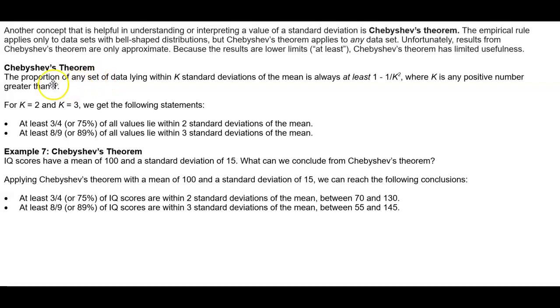Chebyshev's theorem is the proportion of any set of data lying within K standard deviations of the mean is always at least 1 minus 1 over K squared, where K is any positive number greater than 1.